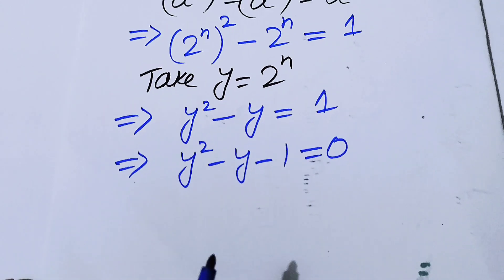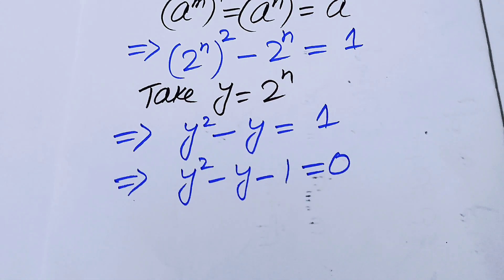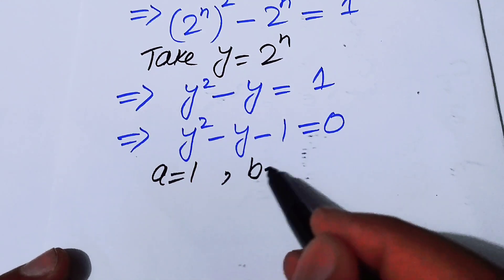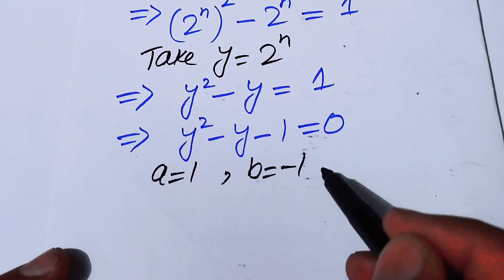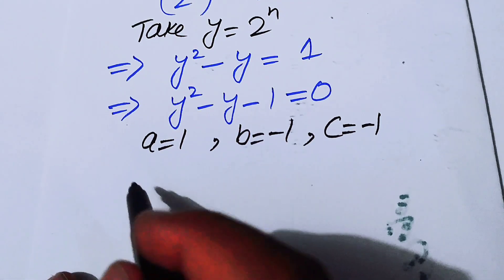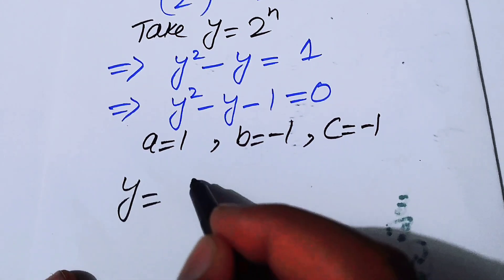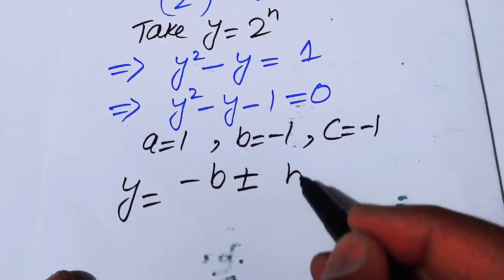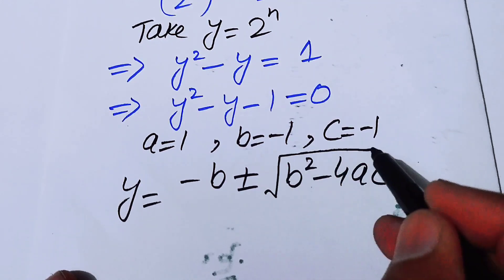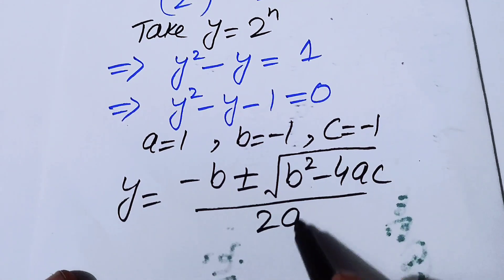Now it is converted into quadratic form, so we will use the quadratic formula to find the value of n. Here a equals 1, b equals minus 1, and c equals minus 1. The quadratic formula is y equals minus b plus or minus the square root of b squared minus 4ac, all over 2a.